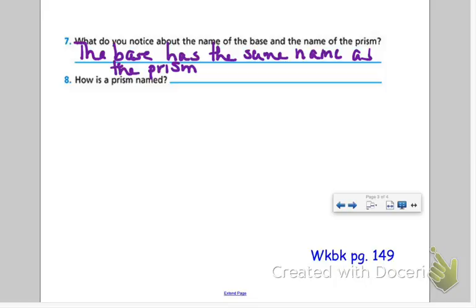So if we had a hexagon base, we had a hexagonal prism. If we had a triangular base or a triangle base, we had a triangular prism. If we have a square base, then we have a square prism. So how is a prism named? It's named after its bases. That simple.